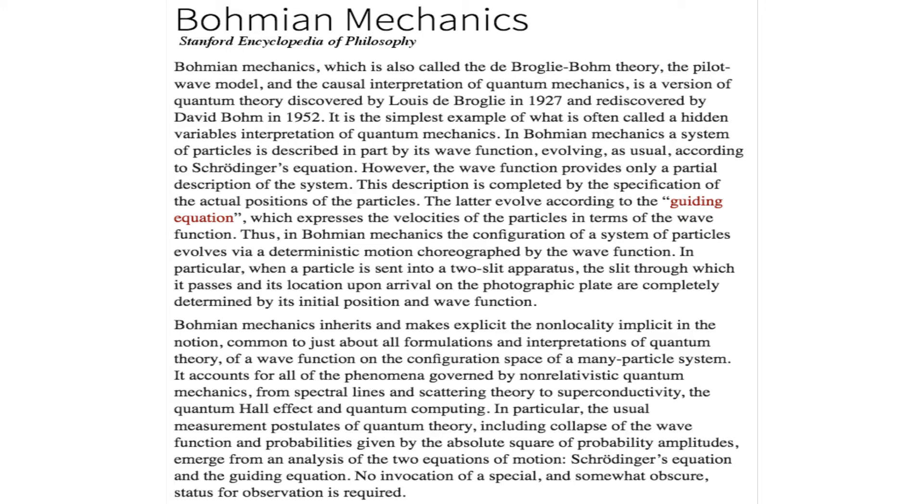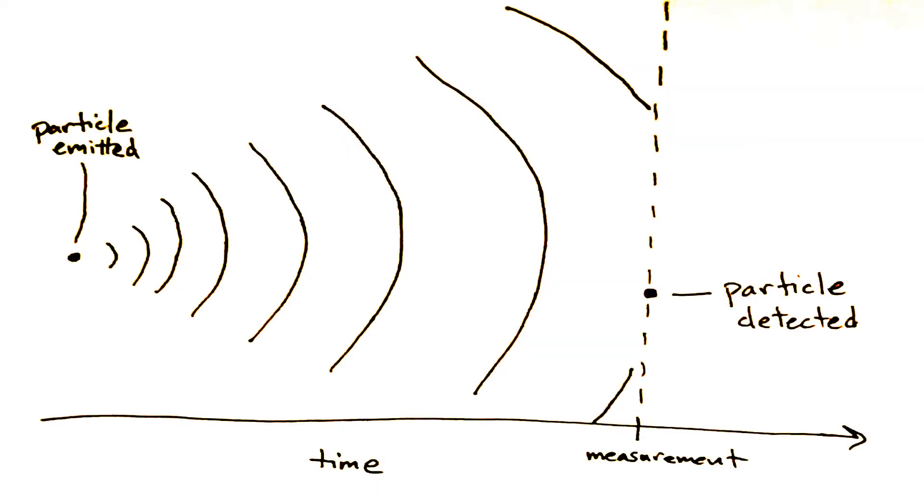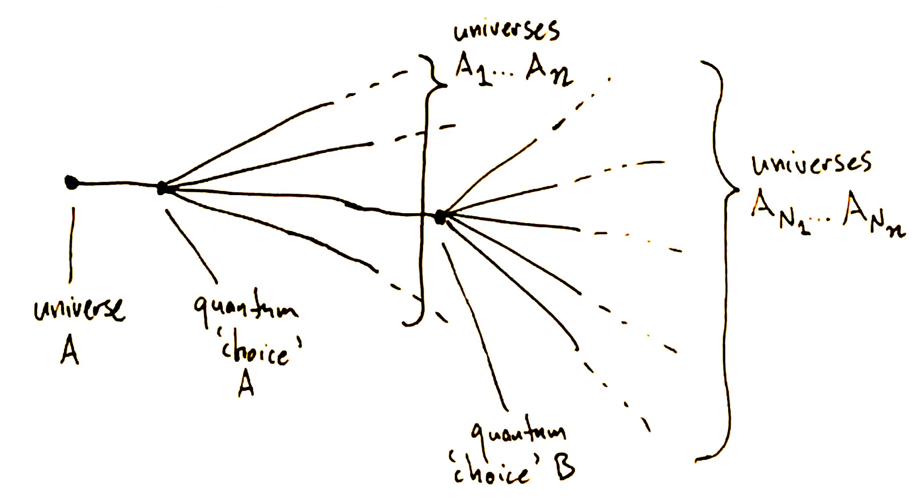This alternate view totally upends our usual picture of the quantum world. It's not a place of particles spread out as fields of probability. There is no wave function collapse, nor is there an inaccessible proliferation of universes.